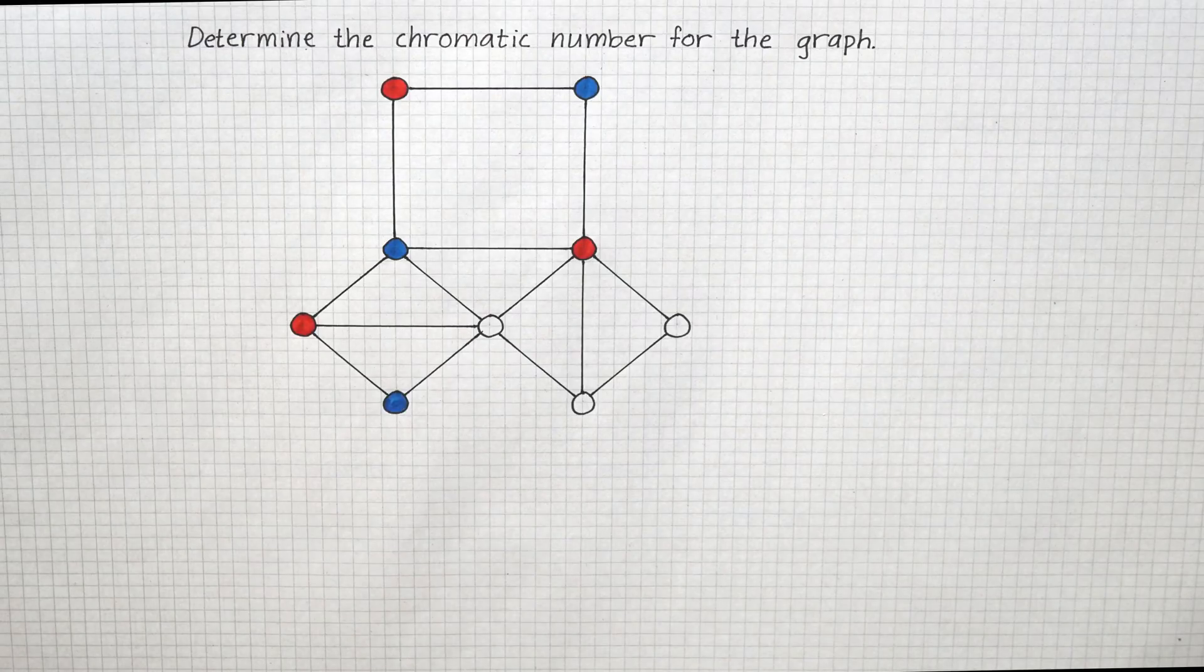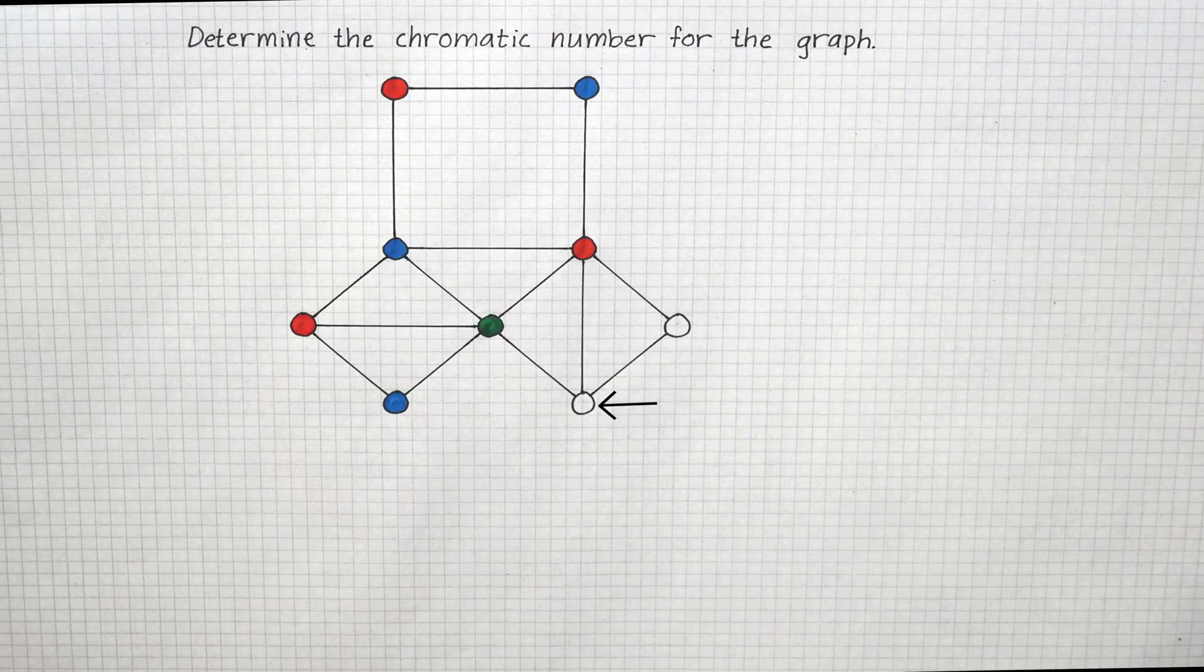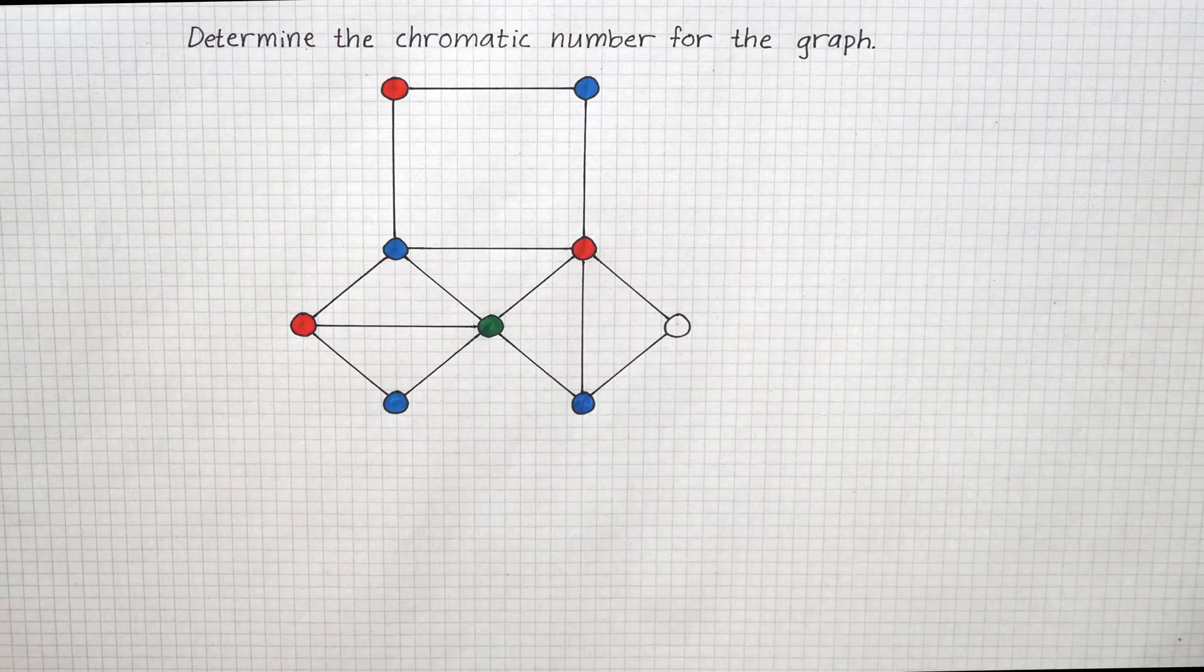This vertex has connections to both red and blue, meaning we have to introduce a new color, green. Here blue is needed because of the edges to both red and green.